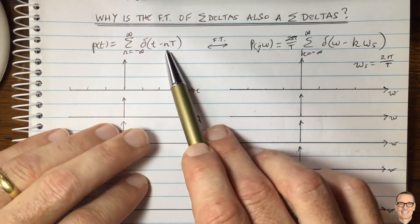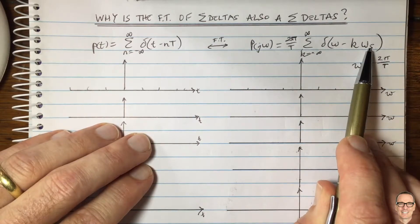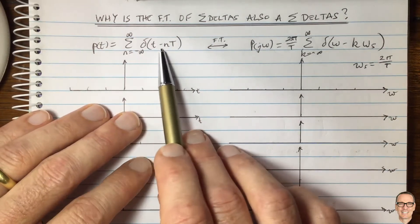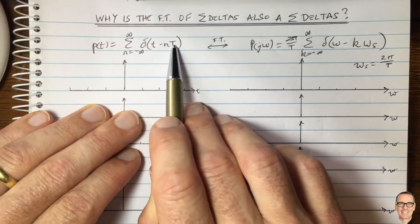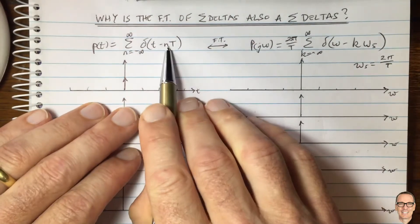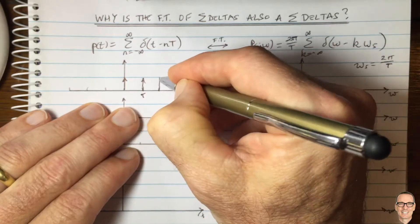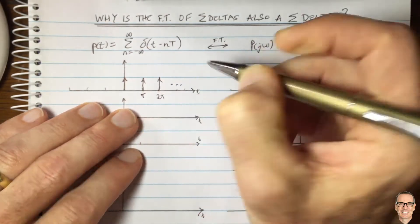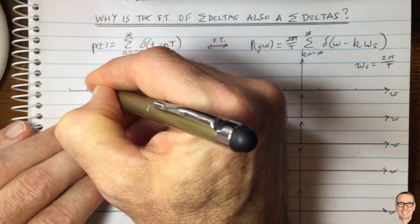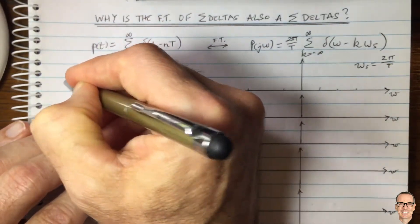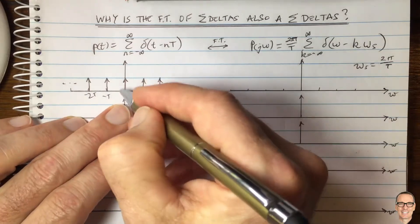Here's the formula for the sum of delta functions in the time domain, and here's the formula for its Fourier transform, which is also a sum of delta functions but in the frequency domain. Let's draw out this equation. If n equals 0 it's a delta function at time equals 0. If n equals 1 it's a delta function shifted to capital T, and for n equals 2 shifted to 2T and so on. For negative n it's shifted to minus T, minus 2T and so on. So here's our infinite sum of delta functions — a whole lot of delta functions next to each other separated by capital T.